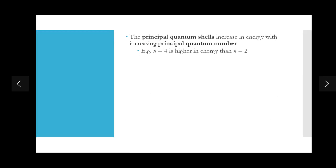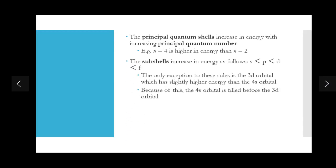The principal quantum shells increase in energy with increasing principal quantum number. The principal quantum number is basically your shell number — for example, n=1 means the first shell, n=2 means the second shell. So n=4 is higher in energy than n=2, meaning the fourth shell is higher in energy than the second shell. As we increase the distance, we increase the energy.